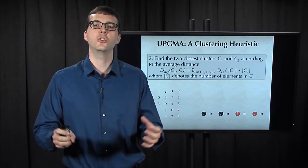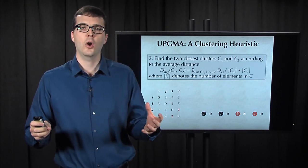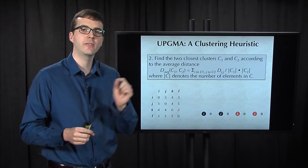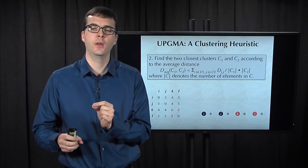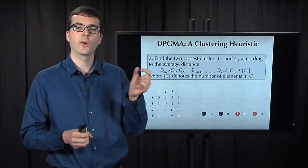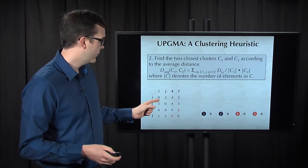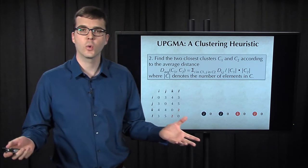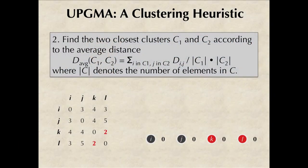At each step it looks for the two closest clusters according to the average distance among all pairs of elements taken from the two clusters. Now at this stage of the algorithm we're dealing with single element clusters, so if we're looking for the closest clusters, that's just the smallest element of the distance matrix, which corresponds to K and L. Now I hope you're worried because we've seen the perils of choosing the minimum element of a distance matrix as neighbors. But UPGMA is a heuristic and it's not going to break like additive phylogeny did.